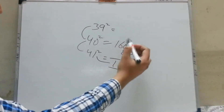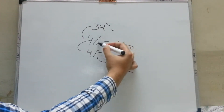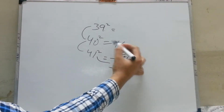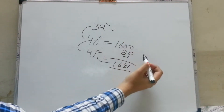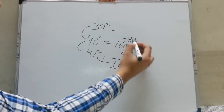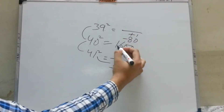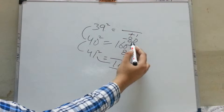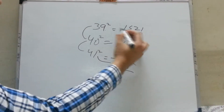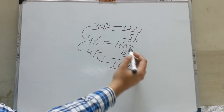In the same way, if you have to calculate the square of 39, which is the previous digit of 40, you will subtract 40 two times — that means minus 80 — but again plus 1. So the answer is 1600 minus 80 is 1520, plus 1 is 1521, which is the square of 39.